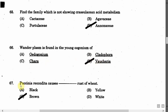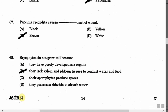The next question is: Puccinia recondita causes which rust of wheat? Option A: Black. Option B: Yellow. Option C: Brown. Option D: White. The correct answer is Option C, that is Brown.